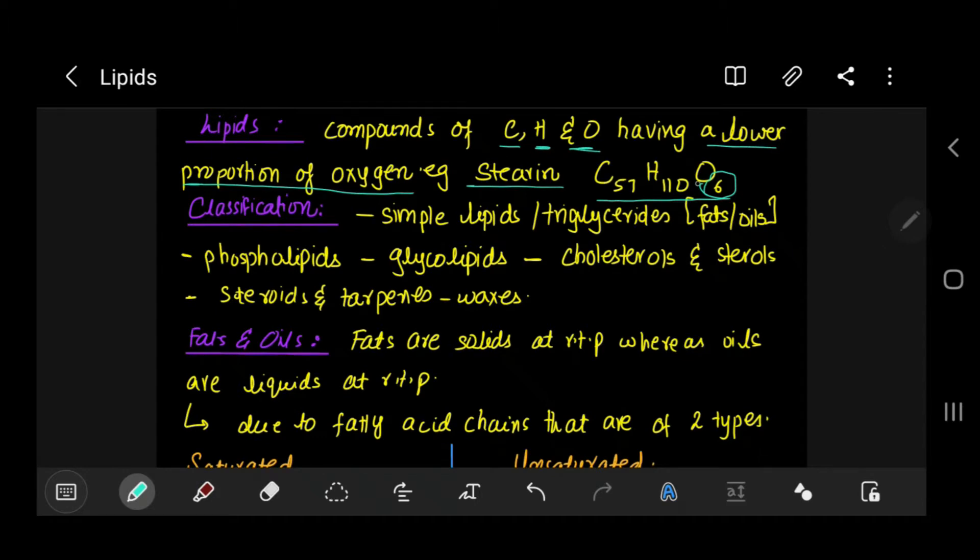Now let's go on to the classification of lipids, the different types. First off, we have simple lipids or they are also called triglycerides. We have phospholipids, we have glycolipids, we have cholesterols and sterols, we also have steroids and terpenes, and we have waxes.